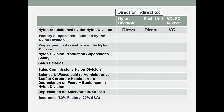Factory supplies requisitioned by the division: we can trace that to the nylon division because of the requisition form that would be filled out. However, this is an overhead cost and would not be traced directly to each unit. It would generally vary with production, so we'll call that a variable cost.